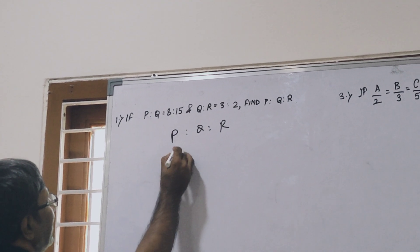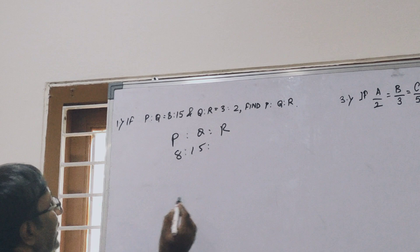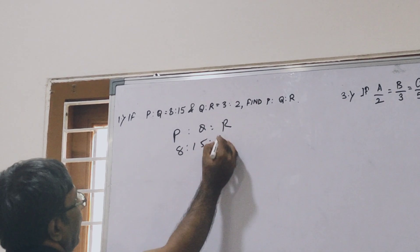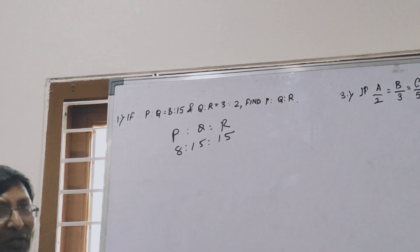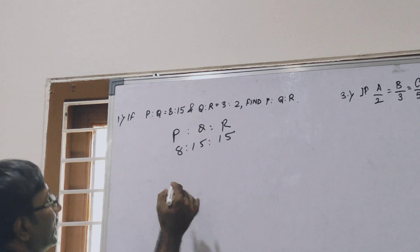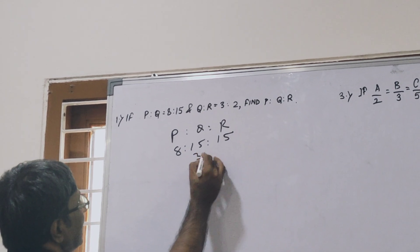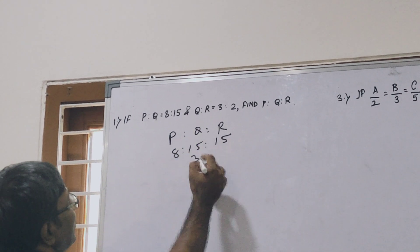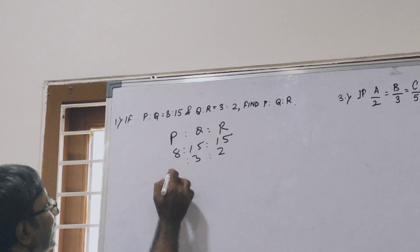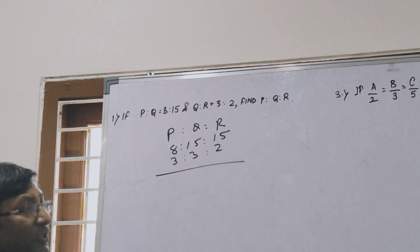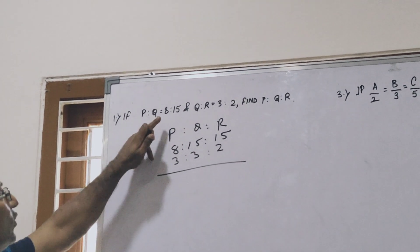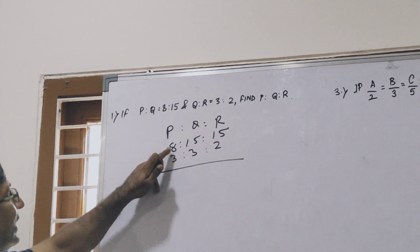Now what is P ratio Q? 8 ratio 15. So write here 8, this is 15. Now R is vacant near to 15, so also write 15. Again Q ratio R is 3 ratio 2, so Q is 3 and R is 2. This is vacant near to 3, so write here 3.